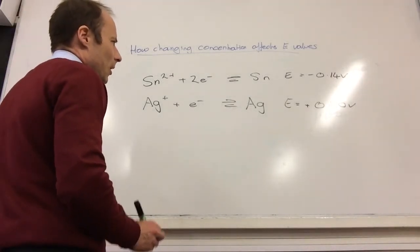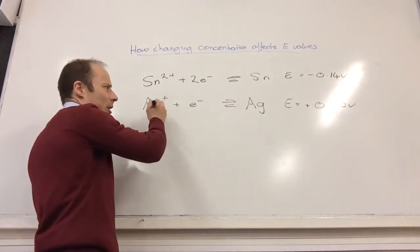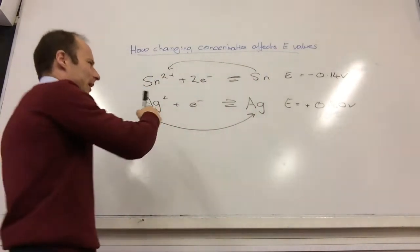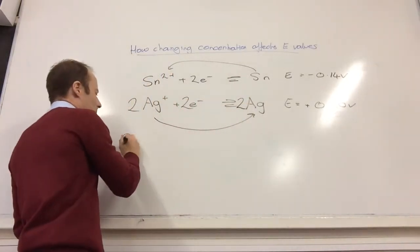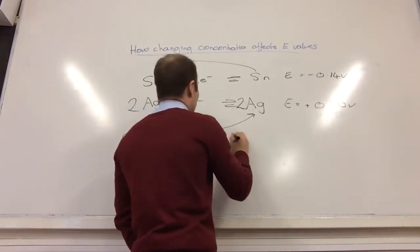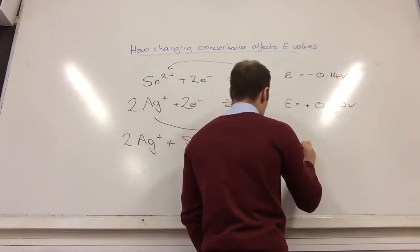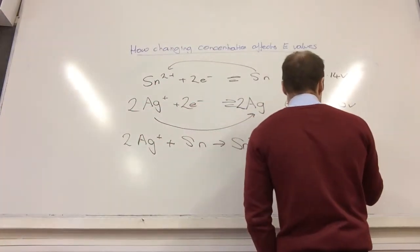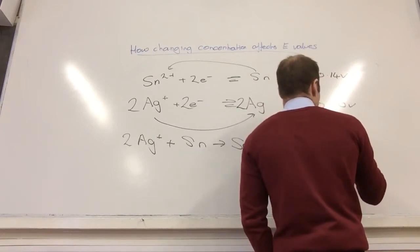So example number two. First of all, let's think about it. This one's positive so this one's going to go that way. This one's negative, so it makes it nice and easy. I'm going to combine them together, but what do I need to do to this guy? 2. Excellent. So the overall equation becomes 2Ag+ plus Sn gives me Sn2+ plus 2Ag. Overall equation. And my voltage for that one would be 0.94 volts.